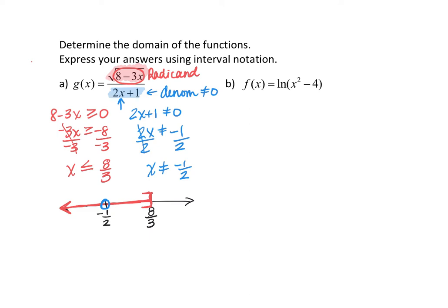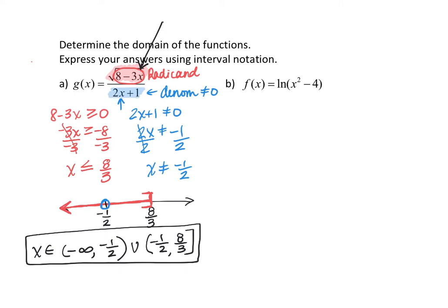Starting from the left and working to the right, we can see we go from negative infinity to negative 1 half — those are all possible x values — but using a parenthesis to indicate we cannot include negative 1 half. Then union with all values between negative 1 half and 8 thirds, using a bracket to indicate that 8 thirds is included in the domain. If we substitute 8 thirds for x, we get 0 in the numerator, which is totally fine. Optionally, you can say x is an element of this interval — that notation just tells you these are the domain values.